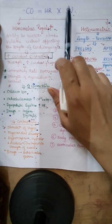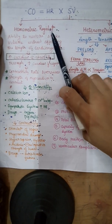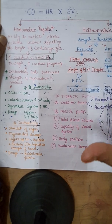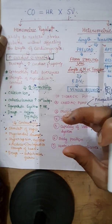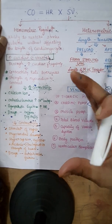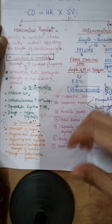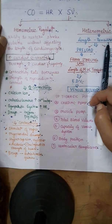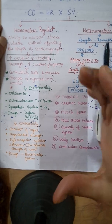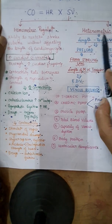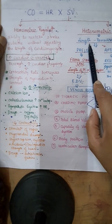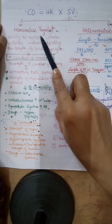So what is homometric regulation? In heterometric regulation, the initial length of the cardiac muscles is stretched by the end diastolic volume, and how much it is stretched ultimately develops a tension within them. This tension is responsible for the force of contraction in the cardiac muscle. So heterometric regulation is totally dependent upon the length of the cardiac muscle.